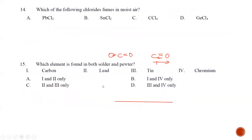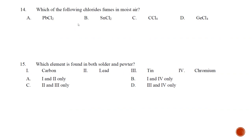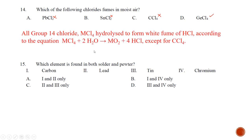Question number fourteen: which of the following fumes in moist air? Fuming in moist air means forming HCl on hydrolysis. CCl4 cannot undergo hydrolysis. Plus two chlorides also cannot undergo hydrolysis. The only one that can undergo hydrolysis is the plus four chloride, so the best answer is germanium chloride, GeCl4. The answer is D.